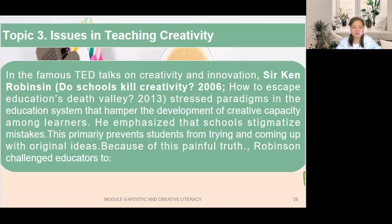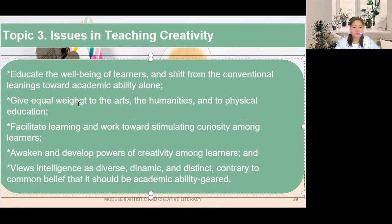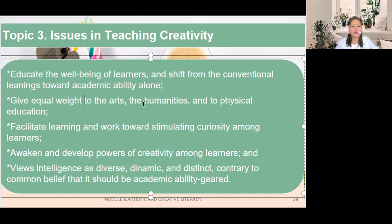Robinson emphasized that schools stigmatize mistakes, which primarily prevents students from trying and coming up with original ideas. Because of this, Robinson challenged educators to educate the well-being of learners and shift from conventional learning toward academic ability alone — to give equal weight to the arts, the humanities, and physical education; facilitate learning and work towards stimulating curiosity among learners; awaken and develop powers of creativity; and view intelligence as diverse, dynamic, and distinct.